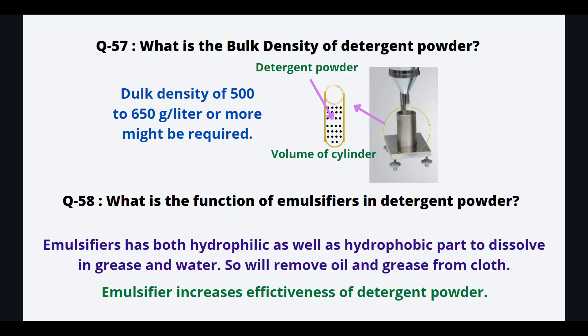What is the bulk density of detergent powder? Bulk density of detergent is 500 to 650 grams per liter, or more might be required.